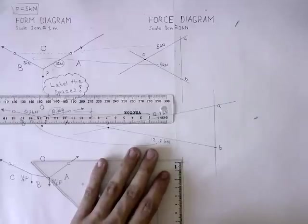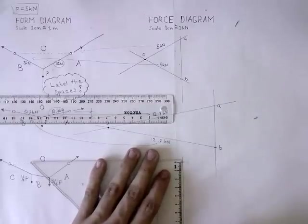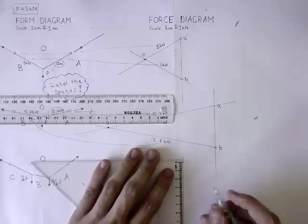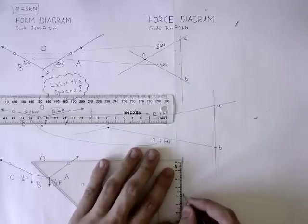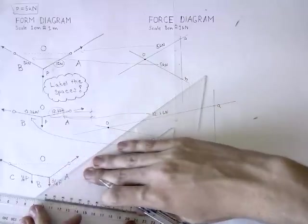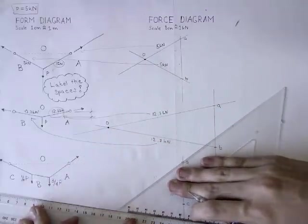Now draw the force AB. The size of the force AB is 3.75 kN, which makes it 3.75 cm. Draw force BC. Its size is 1.25 kN. Now transfer all the lines, just like in the previous examples.